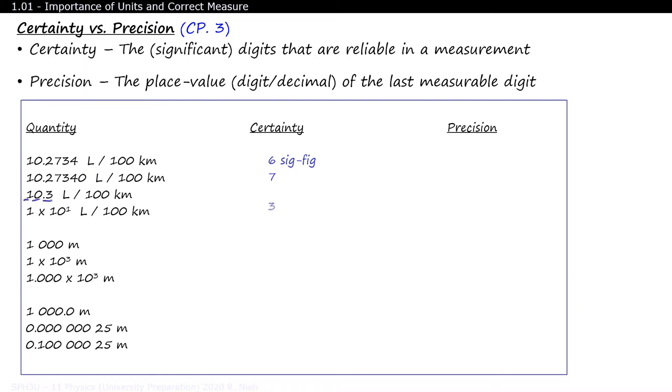10.3 has 3 significant figures. This fourth example is written in scientific notation. In this case, the coefficient will tell you the certainty of the measurement. Since there's only one digit in the coefficient, it has a certainty of just 1.